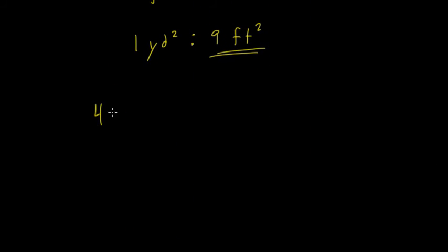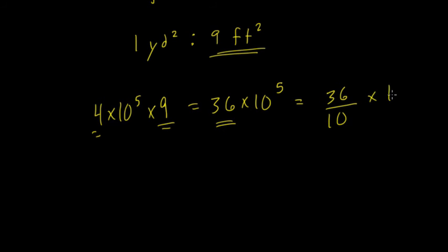We have 4 times 10 to the 5th, and we're going to multiply that by 9. So what's 4 times 9? Well, that's 36 times 10 to the 5th. That's still not in scientific notation. We take 36 and divide it by 10, and to undo that, we multiply 10 to the 5th by 10.